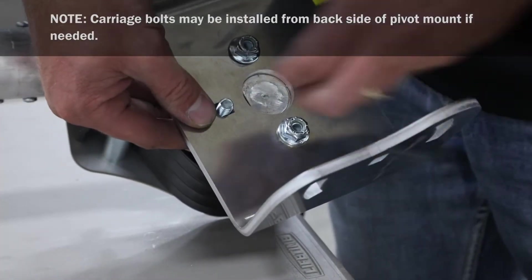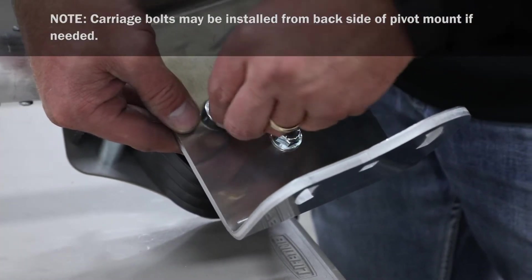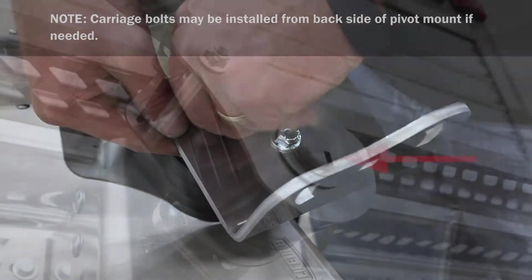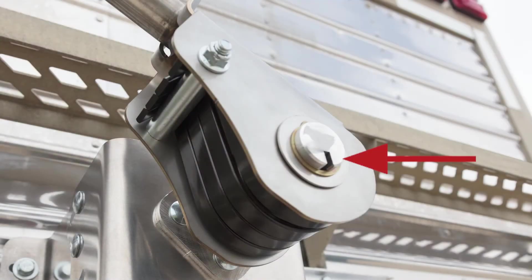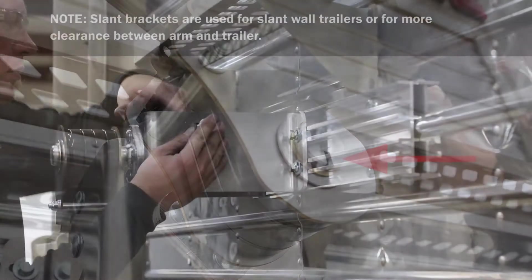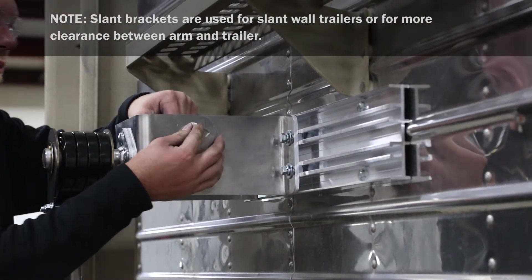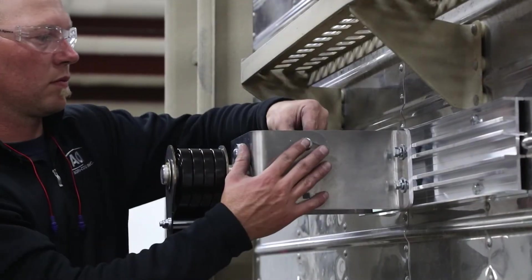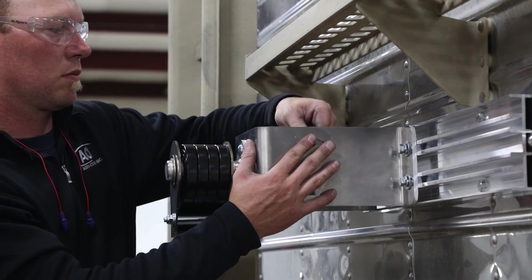Bolt pivot arm to slant bracket with wide side up using carriage bolts and nuts. Ensure keyway and pivot shaft is pointed down. Next, bolt pivot arm with slant bracket to pivot mount using carriage bolts and nuts. Leave bolts loose for now.